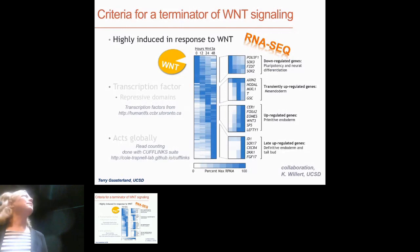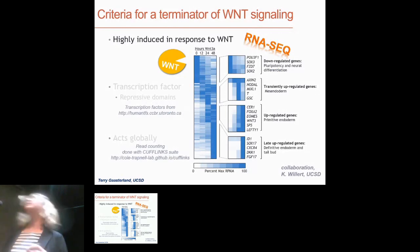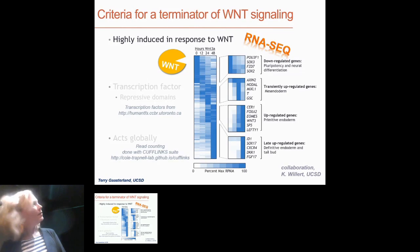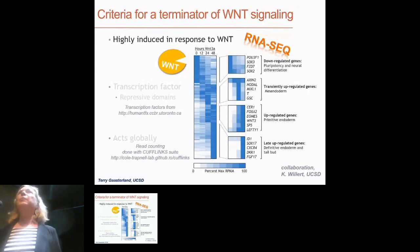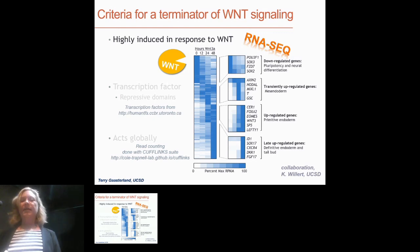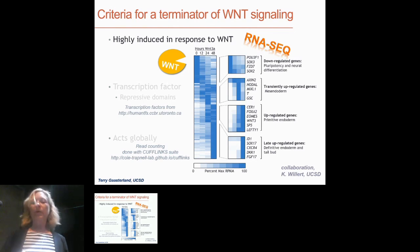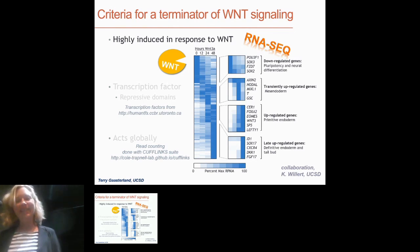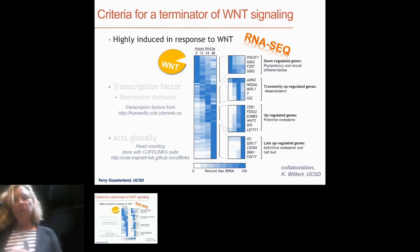We needed something highly induced in response to Wnt. We took Wnt3a and dosed human pluripotent stem cells over time — the cells start to differentiate and organize. We took cells at 12, 24, and 48 hours compared to zero and did RNA sequencing. The primary genes that came up early include a top block of downregulated genes — pluripotency and neural differentiation genes turning off — and then transiently upregulated genes including T (brachyury), a known Wnt response gene.